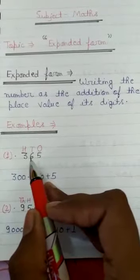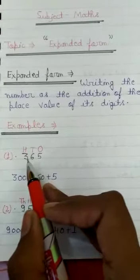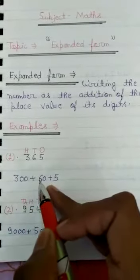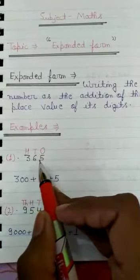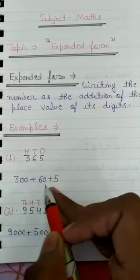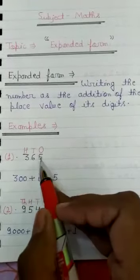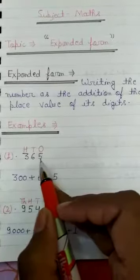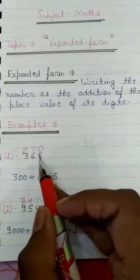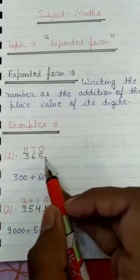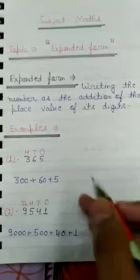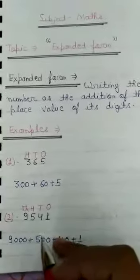Then write 6. After 6, how many numbers? 1 number. Then we write 1 zero — so 60. Plus, then we will write 5. After 5 there are no numbers, so we write no zeros — just 5. So 365 = 300 + 60 + 5.